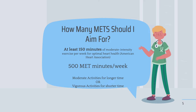How many METs should you be aiming for? The American Heart Association recommends at least 150 minutes of moderate intensity aerobic exercise each week for optimal cardiovascular health, which amounts to about 500 MET minutes per week. You can perform moderate exercise like brisk walking over a longer period of time, or perform vigorous activities for shorter time periods — it really depends on your personal preferences and what you're able to commit to.